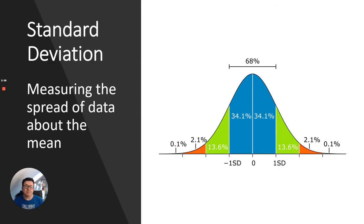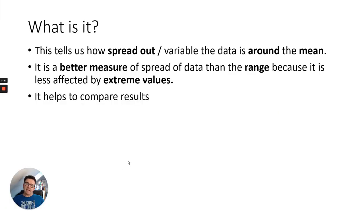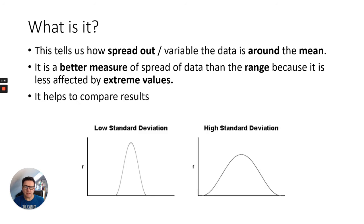Standard Deviation, it's measuring the spread of data about the mean. So if you look at this graph, you can see the mean at zero and then we can work out the spread of data about the mean. So how far away or the range of data either side of that mean and you can work out plus or minus one standard deviation. So as it says, it tells us how spread out or variable the data is around the mean. It is a better measure of spread of data than the range because it's less affected by extreme values. So it helps us to compare results.